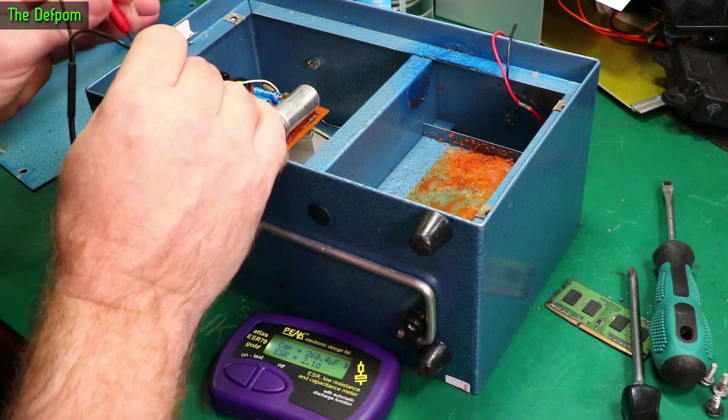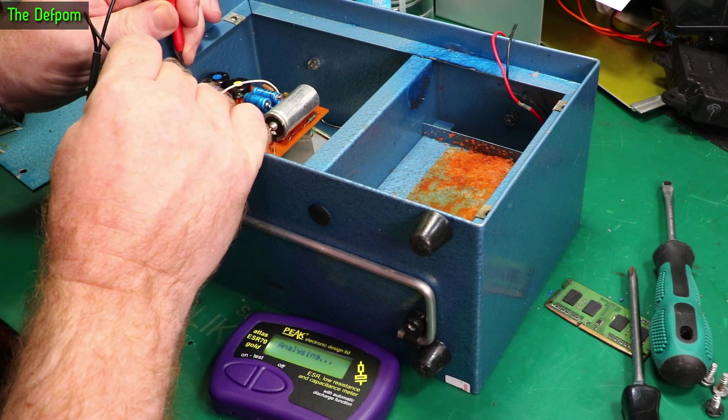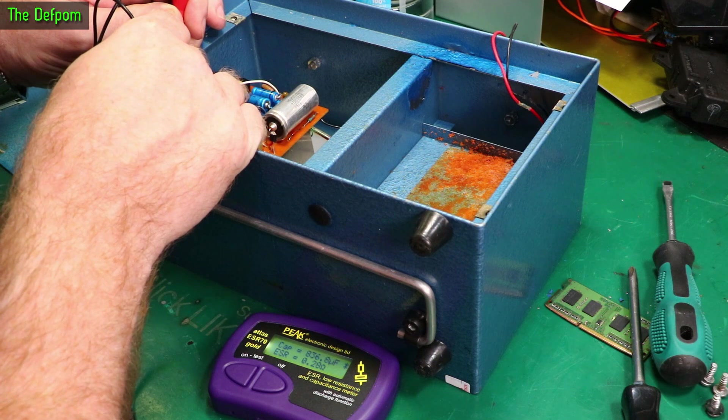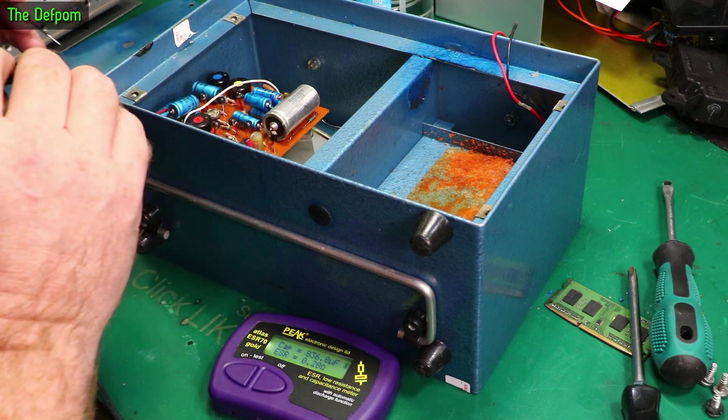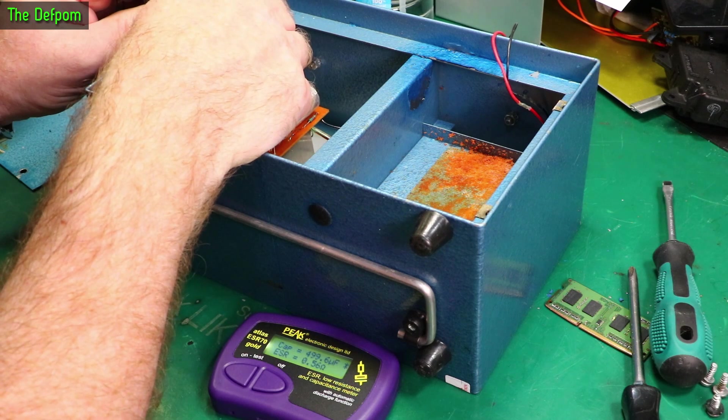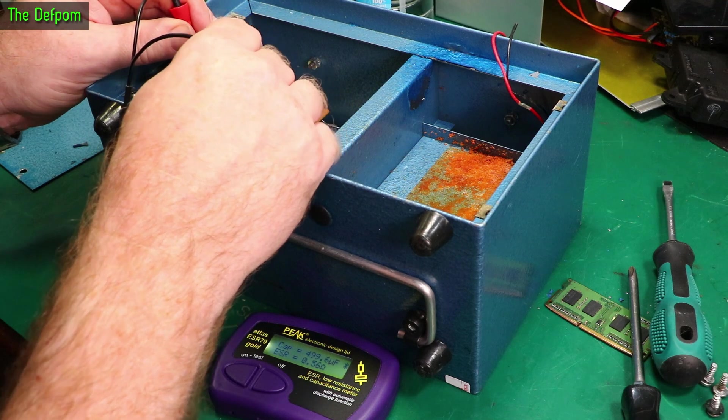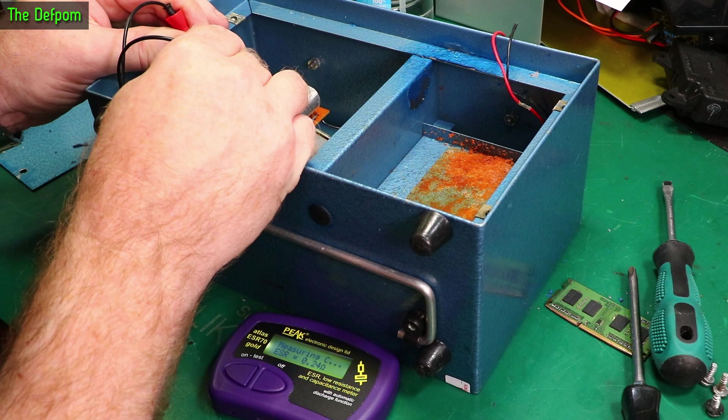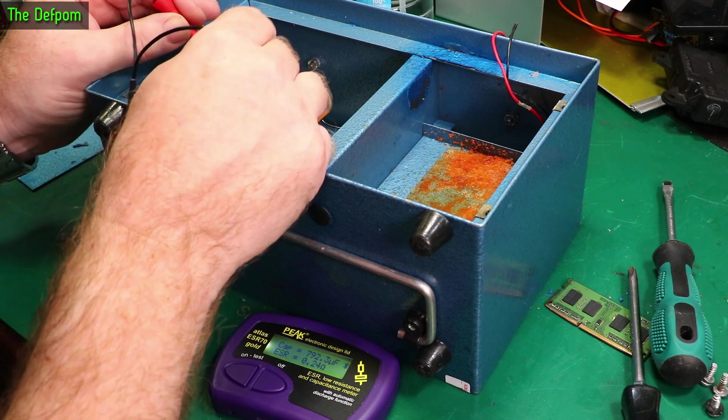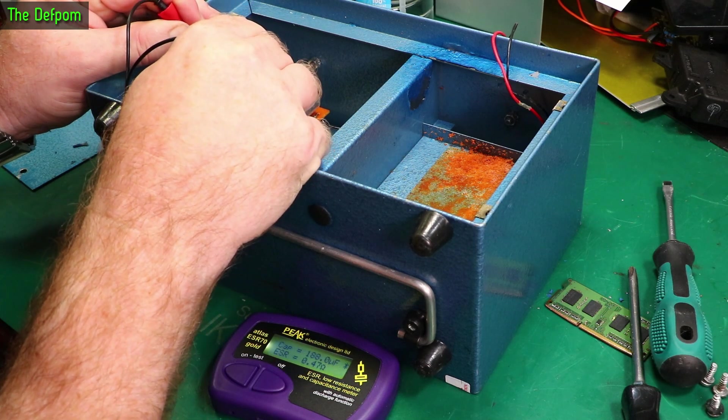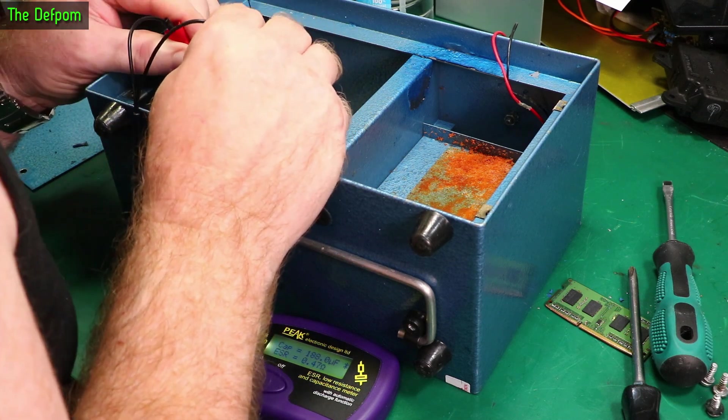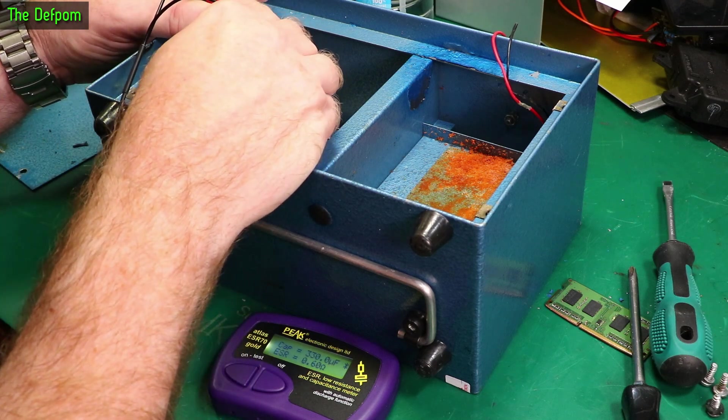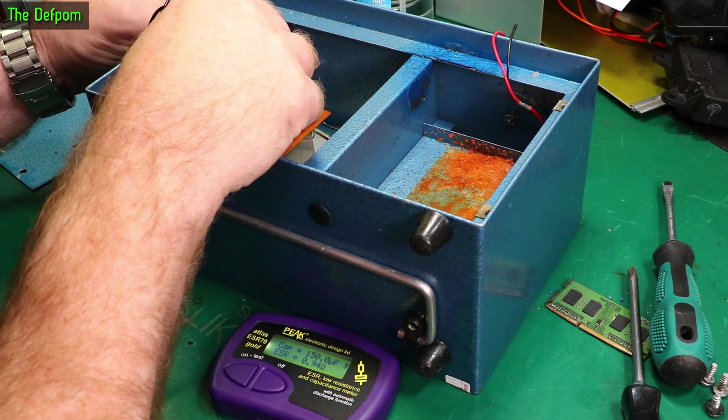This one says 200 microfarad - getting 260 at 2.1 ohms, slightly up. This 470 shows 767 at 1.3 ohms, again a bit up. This one's 836 at 0.3 ohms resistance, good. Another 470 shows 500 at 0.56. The resistances aren't looking too bad. The capacitance is slightly off on some. This 100 microfarad shows 114 at 0.4 ohms, looks fine.